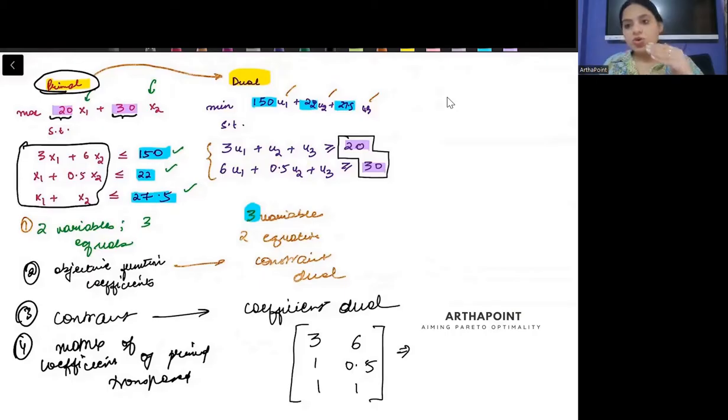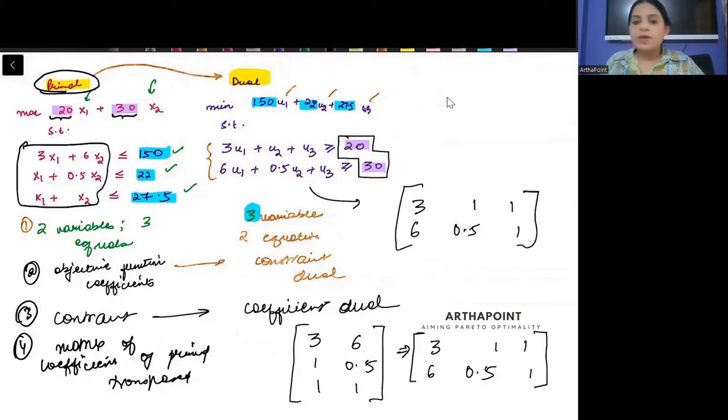Transpose means rows become columns, columns become rows. So 3, 1, 1, 6, 0.5, 1. And you see this is the matrix here: 3, 1, 1, 6, 0.5, 1. This matrix will be transposed. That's the next thing you have to understand.